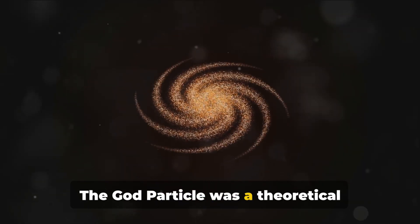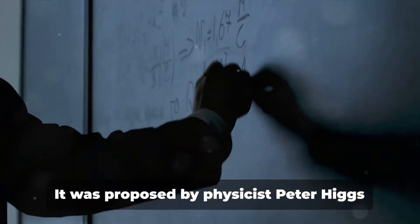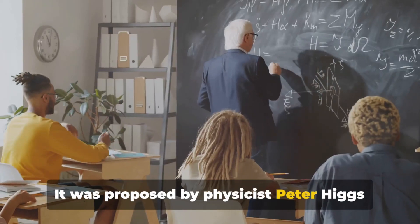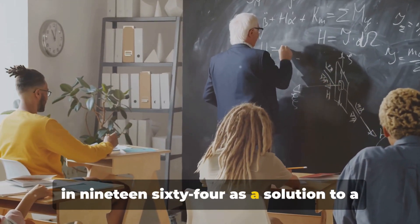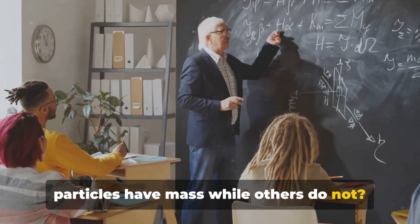The God particle was a theoretical concept for nearly five decades before its discovery. It was proposed by physicist Peter Higgs in 1964 as a solution to a scientific puzzle. Why do certain particles have mass while others do not?